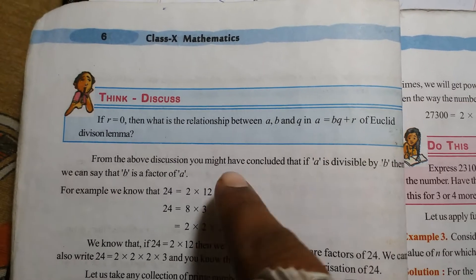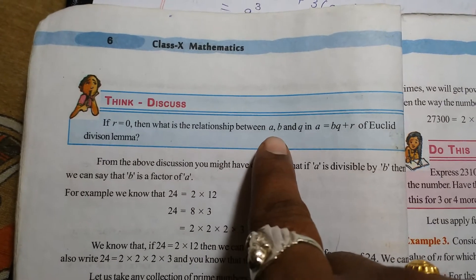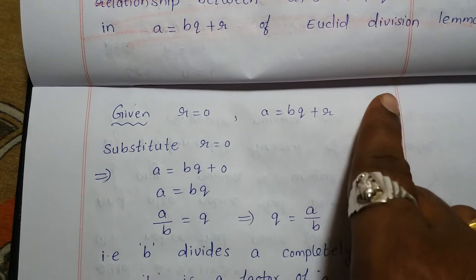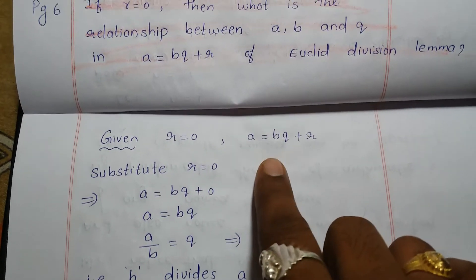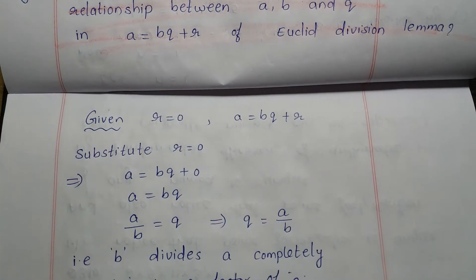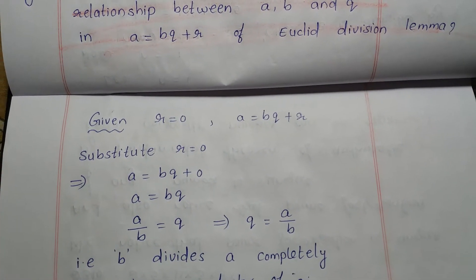0, what is the relationship between a, b, and q? It is given that remainder is 0 and we have a relation that is a = bq + r by Euclid's division lemma, so that...